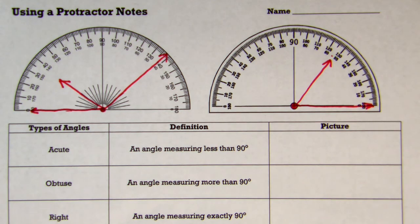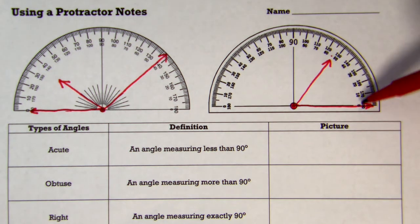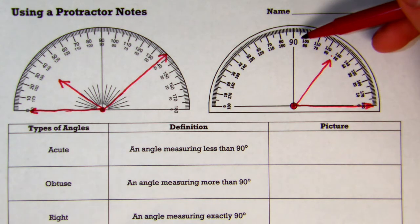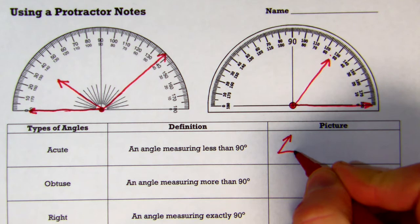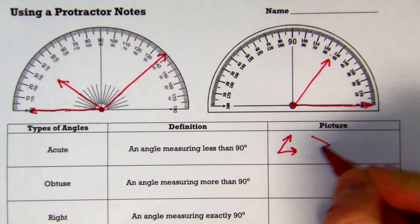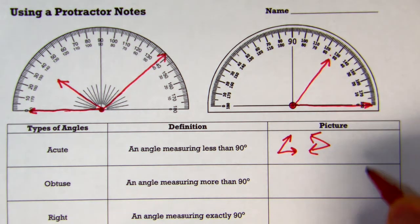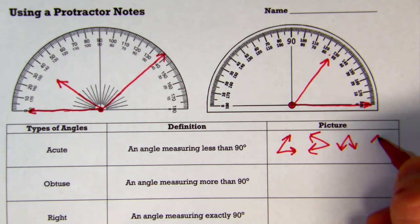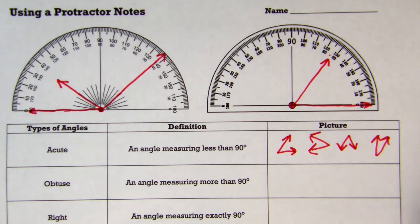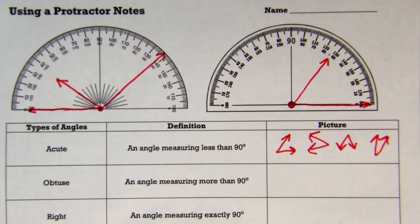So the first one is acute angle. It's an angle that measures less than 90 degrees. So these are any angles that are within that 0 all the way up to 90 degrees right here. So anything less than your 90 degrees. So they would look something like that. You can go the other way if you want. It can be pointing down, it can be pointing up. So any of those are acute angles, anything less than 90 degrees.